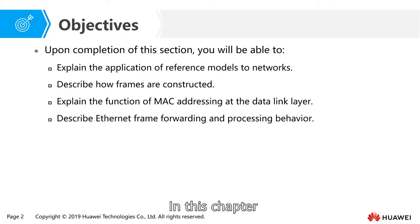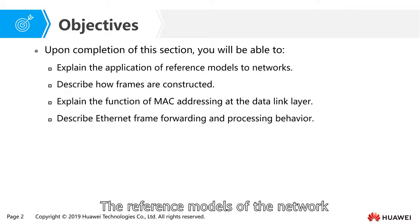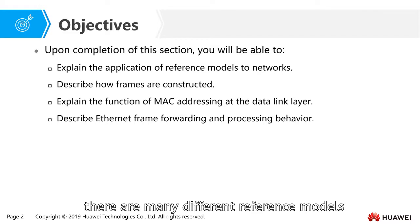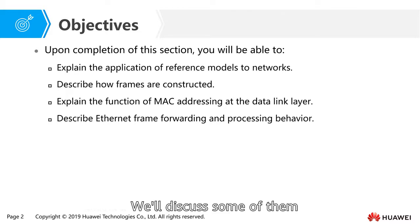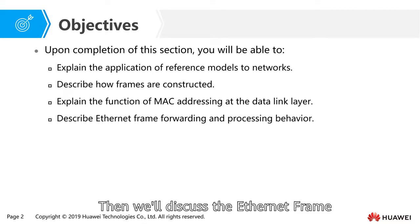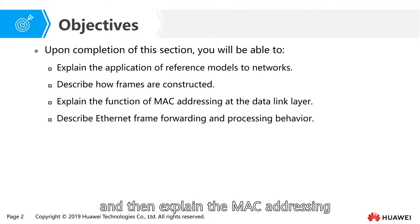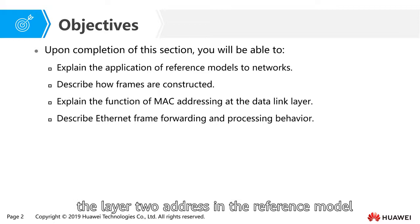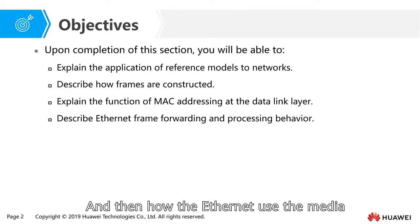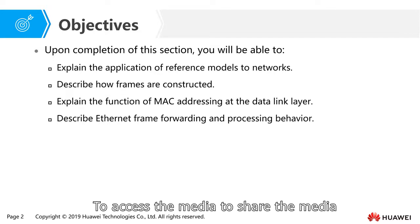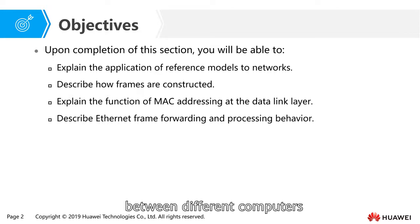In this chapter, we will explain the reference models of the network. There are many different reference models, and we will discuss some of them. And then we will discuss the Ethernet frame, the format of the Ethernet frame, the MAC addressing — the layer 2 address in the reference model — and how Ethernet uses and shares the media between different computers.